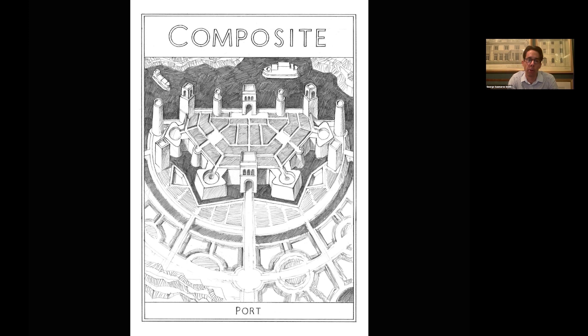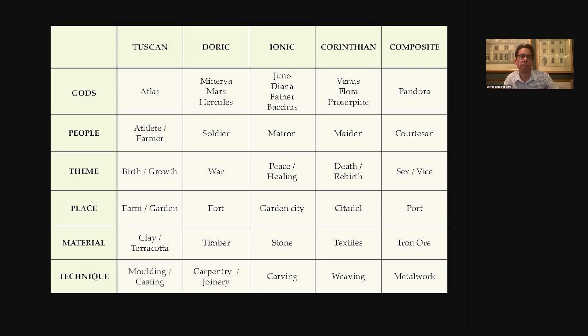These, then, are alternative ways of considering the orders to encompass much more than simply their visual appearance. This now enables us to greatly expand the chart of the orders and what they represent. It is important to say that the themes, materials and techniques do not only have to belong to each order — a Doric column might very well be made of stone or metal, and might be used to represent peace more than war. And all of this encourages us to see the orders as overlapping one another.